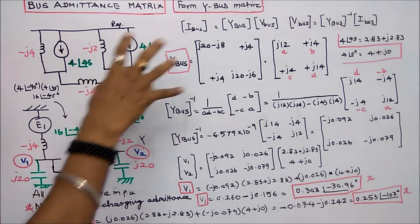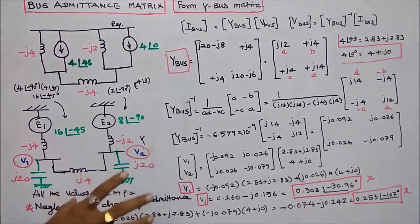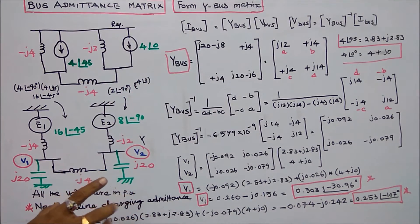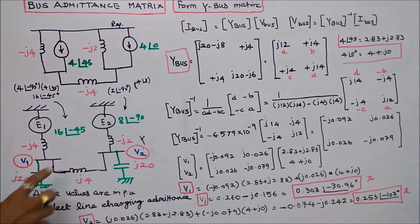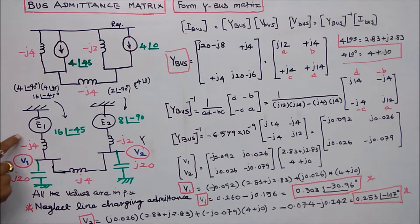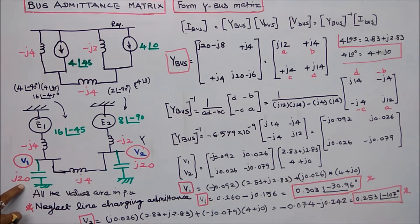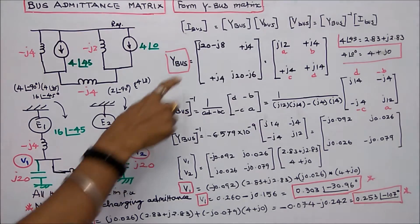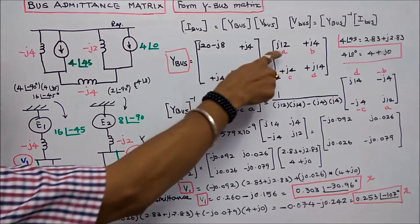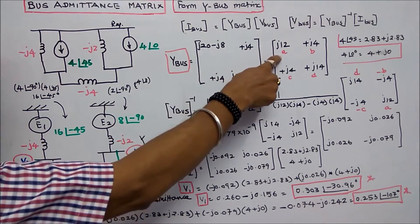The first step is to form the Y-bus matrix. At bus 1, three elements are connected: J20, minus J4, and minus J4, giving J20 minus J8, which equals minus J12.